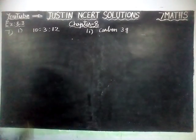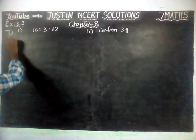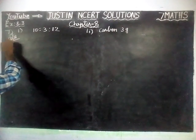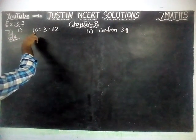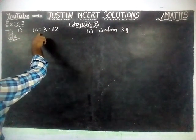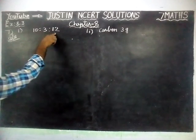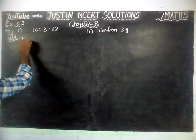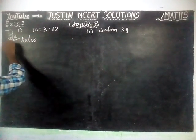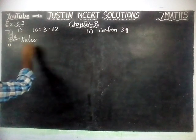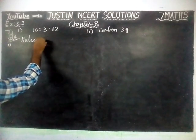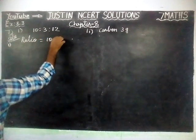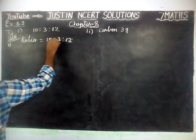Now, we are going to find it one by one. First, the given information: ratio is equal to 10 is to 3 is to 12. First question — ratio is equal to 10 is to 3 is to 12.